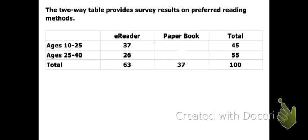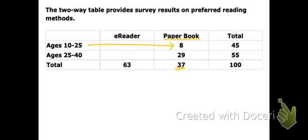If we look at the e-readers column, remember there are 63 total e-readers. It breaks down those e-readers into the number of people between ages 10 and 25 and the number between ages 25 and 40 — 37 and 26 add up to 63. And the paper books column has those 37 people broken down into the ages 10 to 25 and 25 to 40. 8 plus 29 is 37.